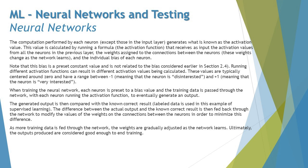With each neuron running the activation function to eventually generate an output. The generated output is then compared with the known correct result, which is labeled data used in the form of supervised learning. The difference between the actual output and the known correct results is then fed back through the network to modify the values of the weights on the connections between the neurons in order to minimize this difference.